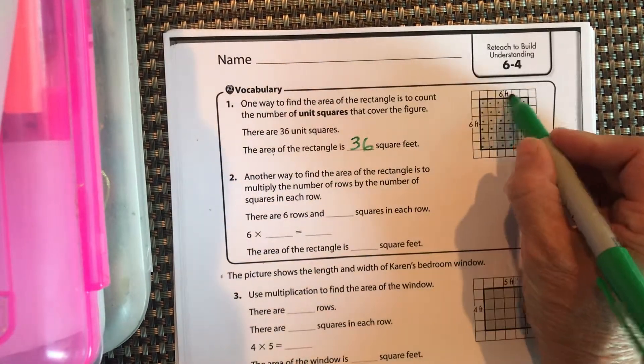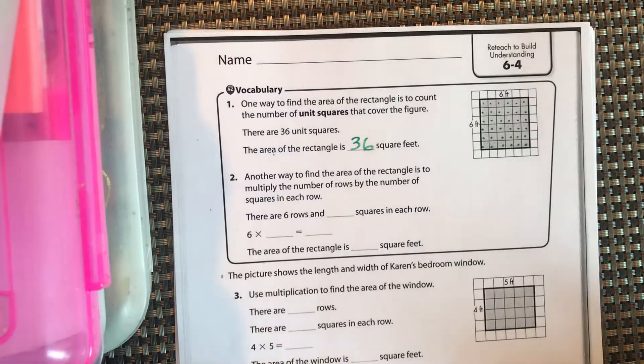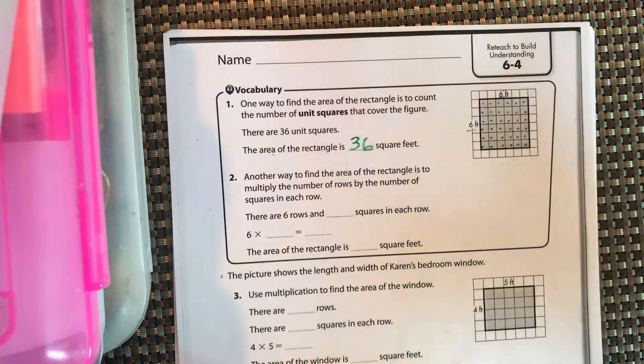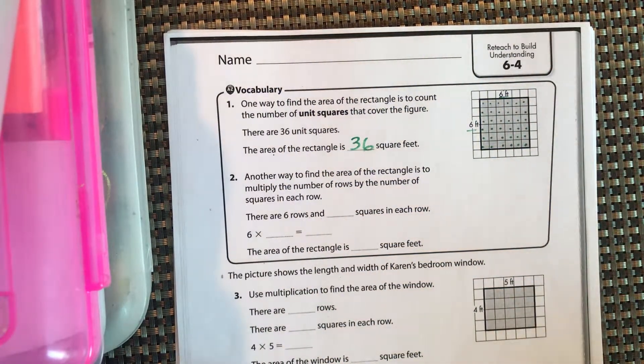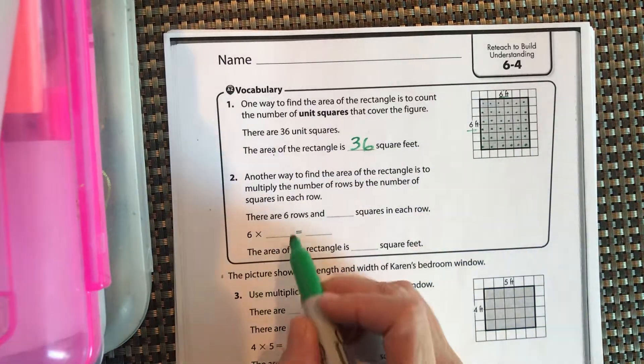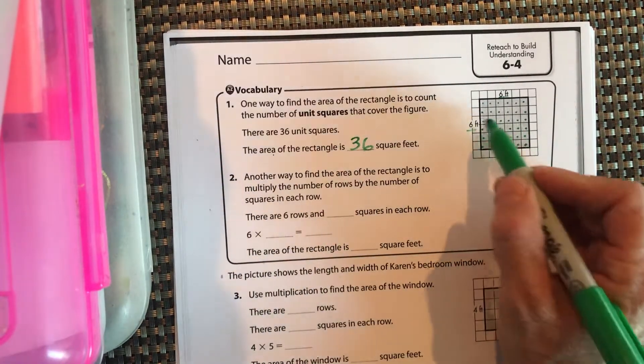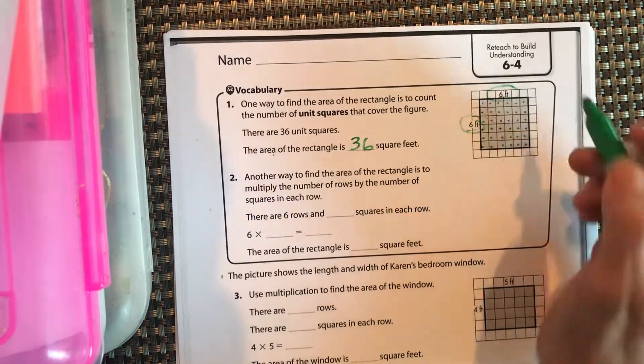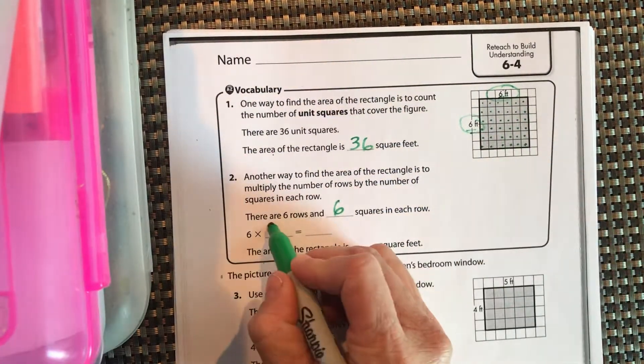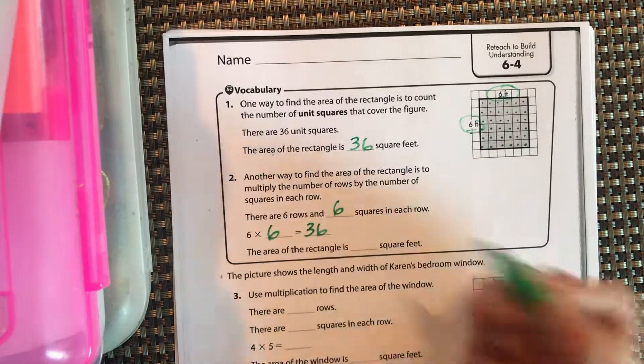Another way to find the area is to multiply the number of rows by the number in each row, because really it's an array and that's how we find how many squares are inside the array. So there are six rows with six squares in each row, so 6 times 6 is equal to 36. So the area of the rectangle is 36 square feet.